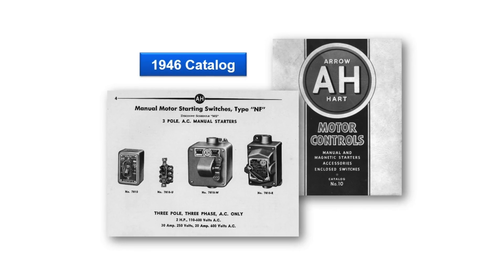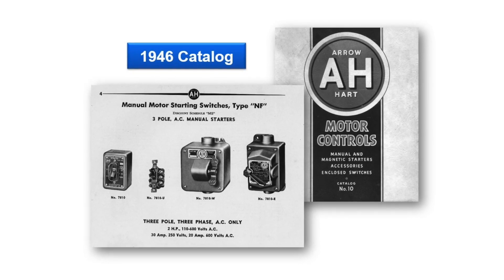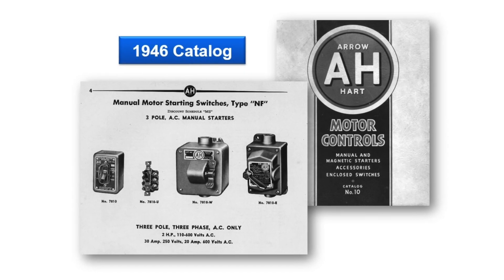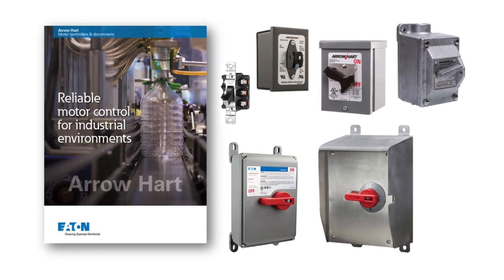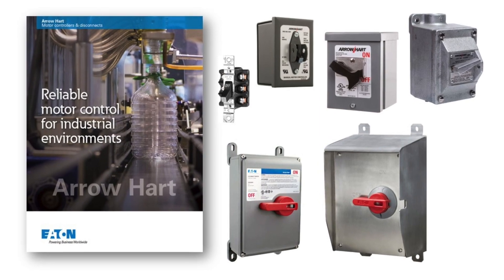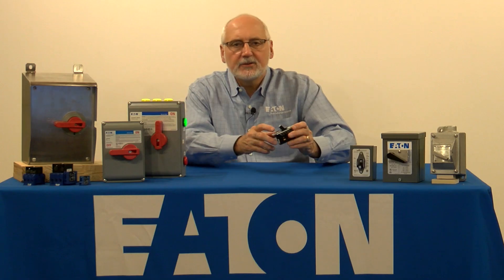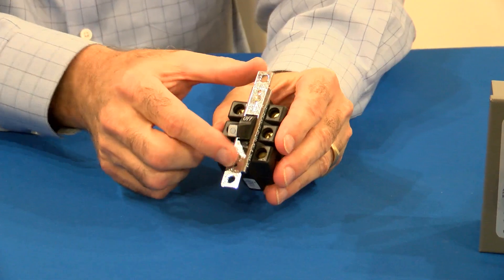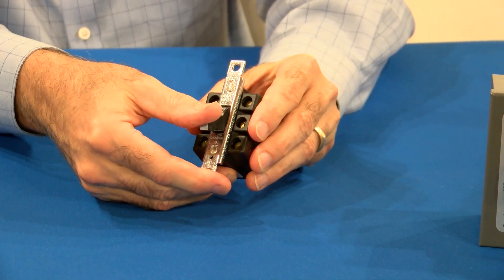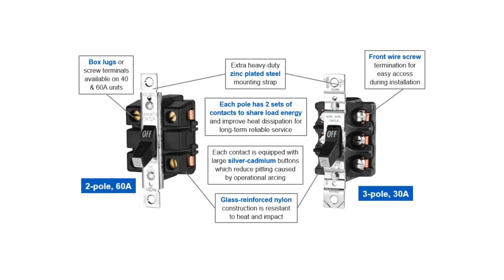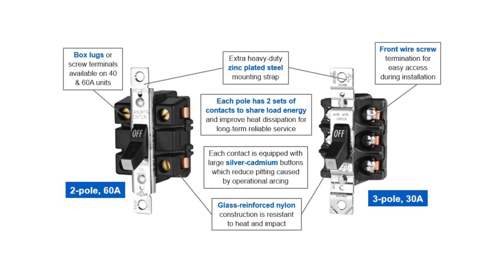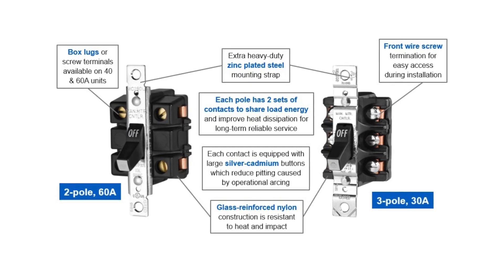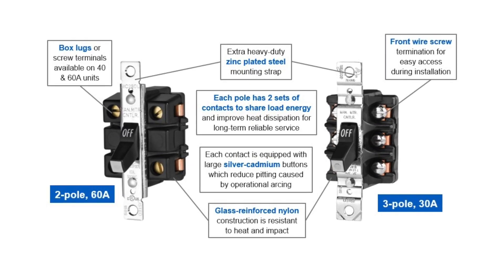Now let's turn our attention to a few motor control products. Aeroheart has been at the forefront of this market for many years with a long history of innovative solutions. Today, the Aeroheart line includes both toggle and rotary style designs to serve a variety of applications. Toggle style motor controllers are very compact for economy and space. They're available in two-pole configurations for single-phase loads and three-pole for three-phase loads up to 600 volts AC.